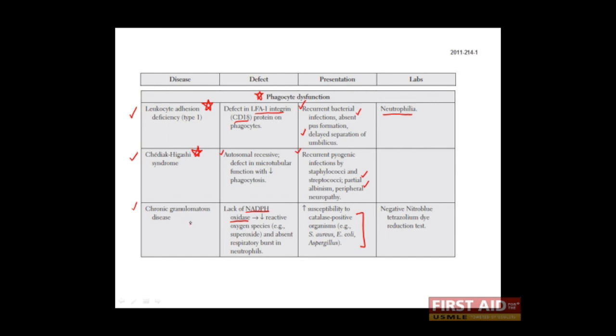And finally, chronic granulomatous disease occurs when there is a loss of one of the potent weapons which is used by phagocytes, namely, NADPH oxidase.